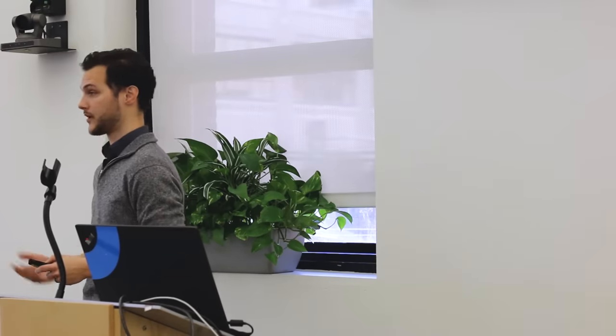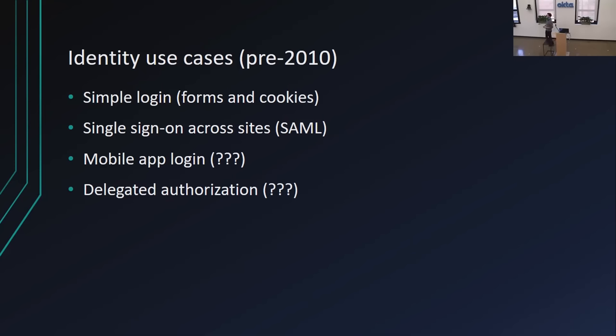The SAML protocol works. It kind of has a reputation of being a little bit hard to work with as a developer, because it's pretty obscure — even more obscure than OAuth. But it works, and it was used back then just like it's used today. There were a couple of new use cases just starting to come onto the scene about 10 years ago. One of them was mobile apps — smartphones were brand new, the idea of mobile apps and app stores was brand new. There was this whole new set of use cases where you want to be able to log into a mobile app and stay logged in after you close the app. How do you keep a long-lived session alive on a device?